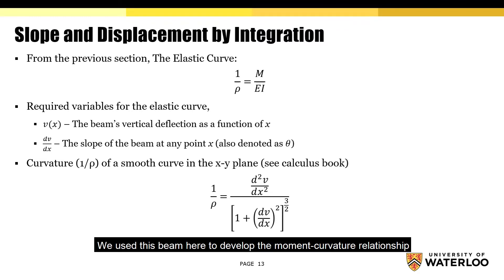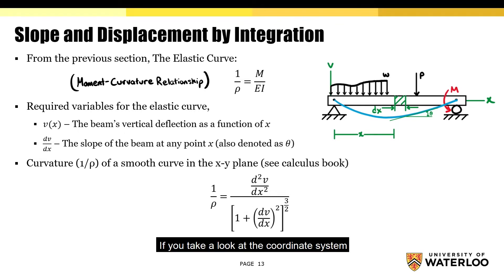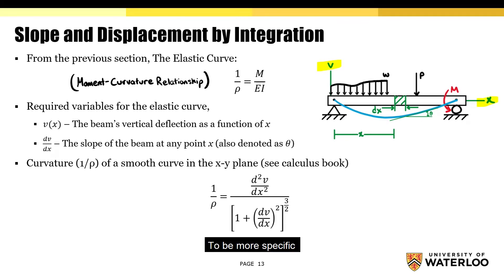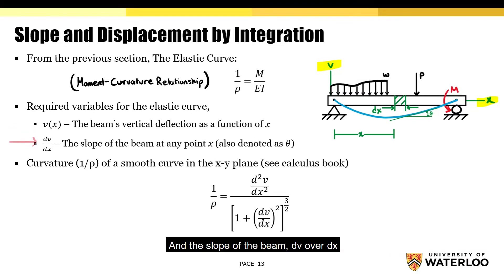From the previous section, we used this beam here to develop the moment curvature relationship. If we take a look at the coordinate system, notice how the beam is defined by the coordinates v and x. To be more specific, v is a function of x that represents the beam's vertical deflection at any point x. And the slope of the beam, dv over dx, represents the slope at any point x.